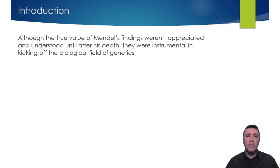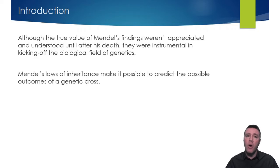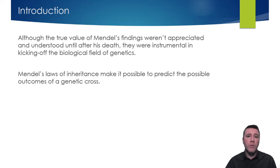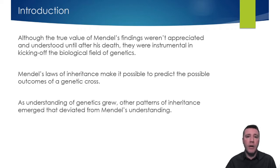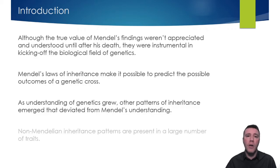However, it wasn't until 1900, 16 years after Mendel's death, that scientists began to realize the full significance of his work. Although significantly much more about genetics has been learned since then, Mendel's laws of inheritance — the law of dominance, the law of segregation, and the law of independent assortment — were pivotal in establishing that new field of biology. We have also discovered that far more complex patterns of inheritance deviate from Mendel's understanding and his laws. Non-Mendelian inheritance patterns comprise the majority of inheritance patterns in diploid organisms.